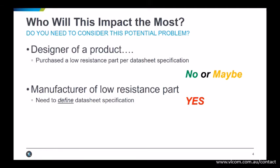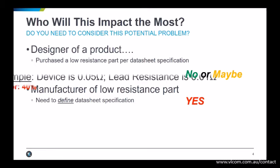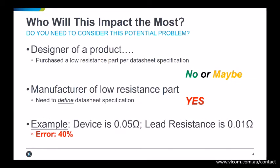Consider the situation where you are making 50 milliohm resistors and your test setup uses leads that are 10 milliohms each. This has the potential to result in 40% error in what you are measuring.